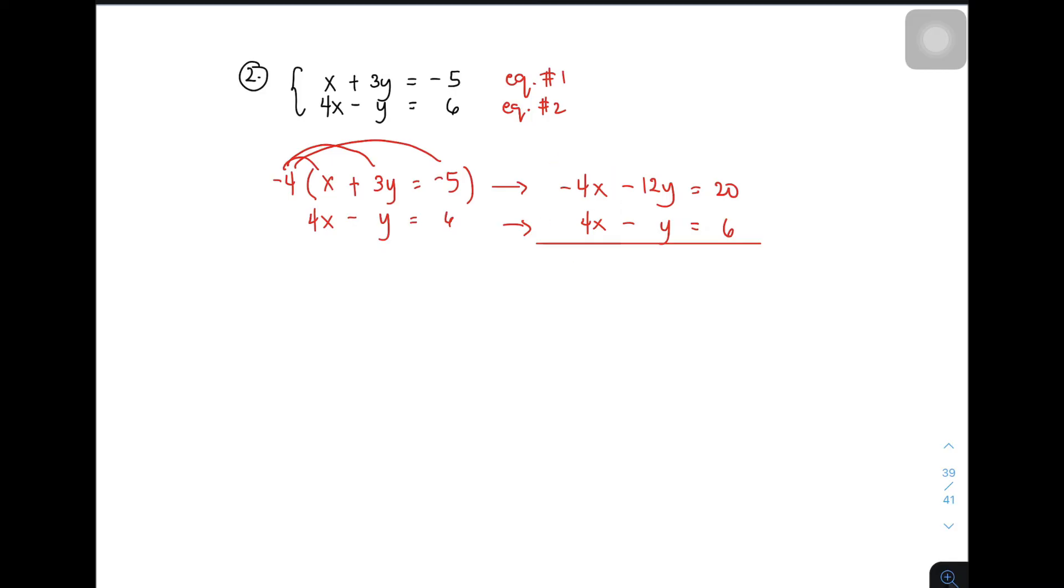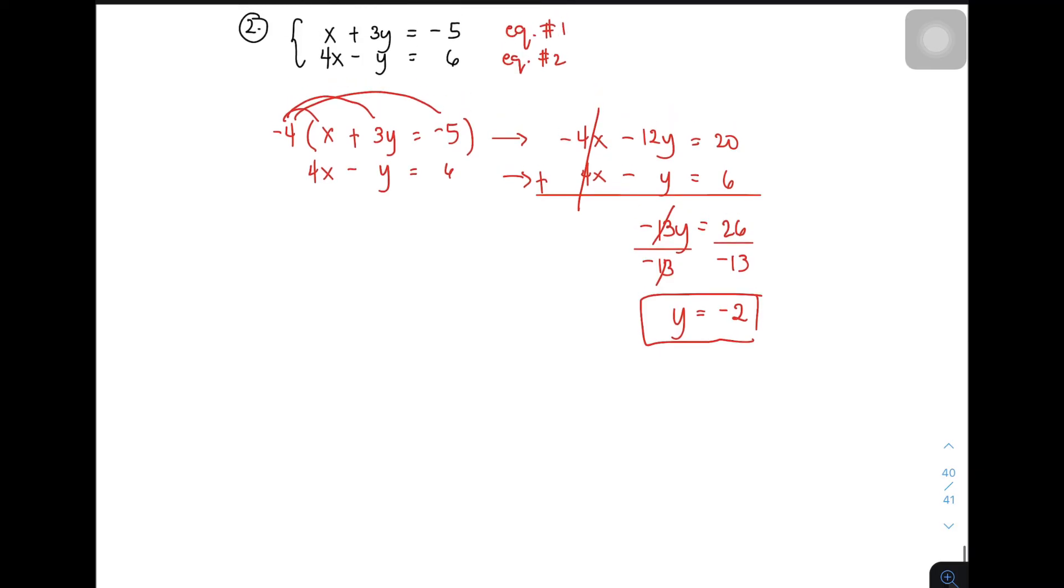As you can see, we can eliminate this part kasi negative 4x plus 4x is 0. Adding negative 12y and negative y, this will give you negative 13y. And this part, it will give you 26. Dividing both sides by negative 13, it will give you y equals negative 2. This is the value of y. Now, since you already have the value of y which is negative 2, we can now solve for x.